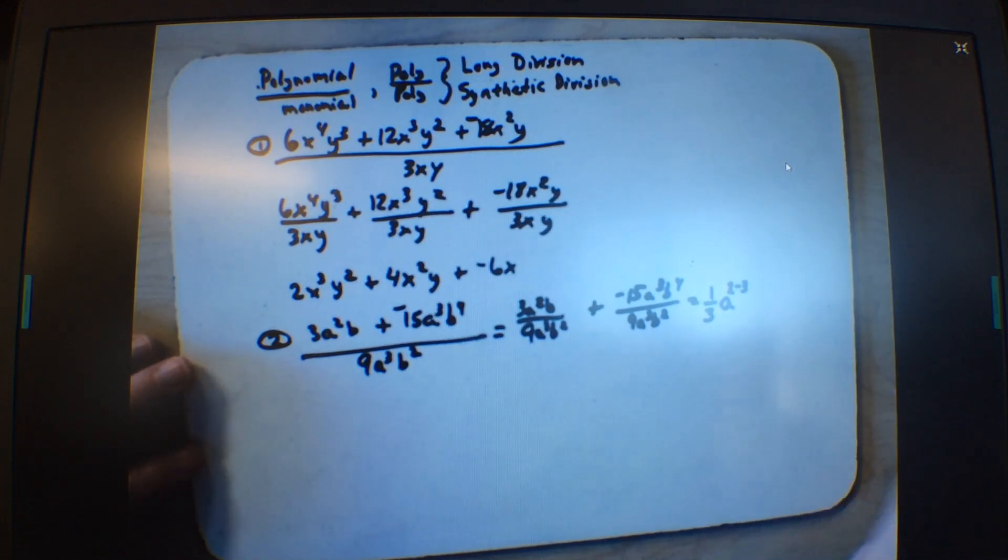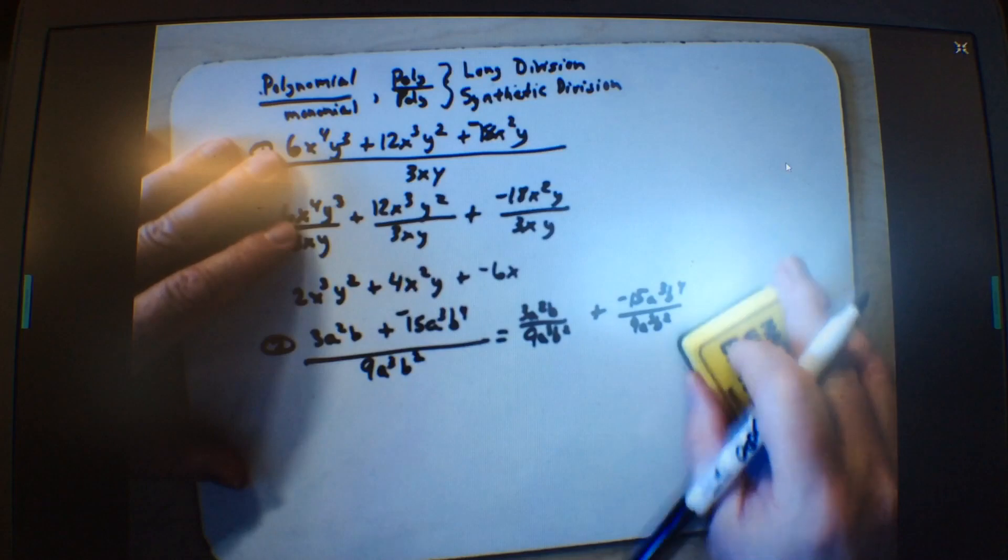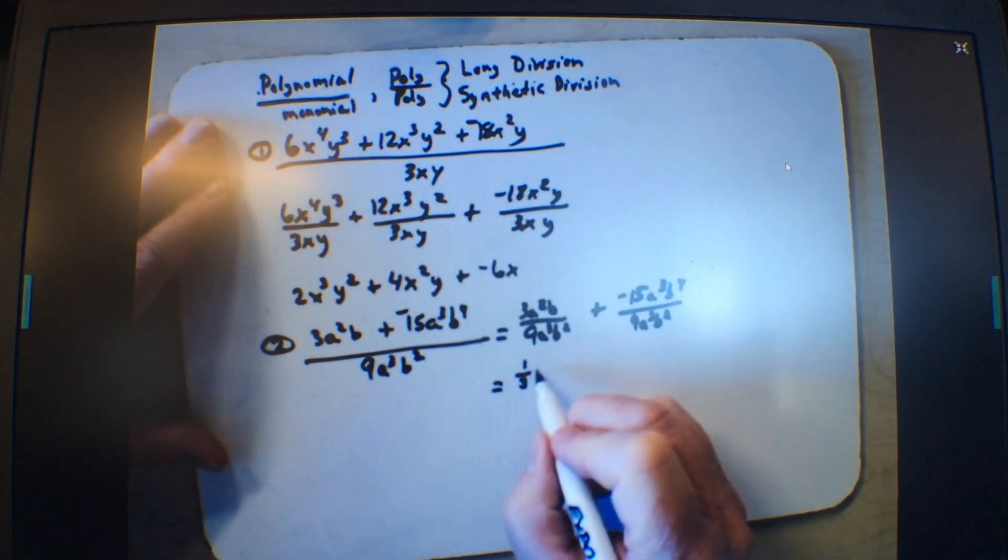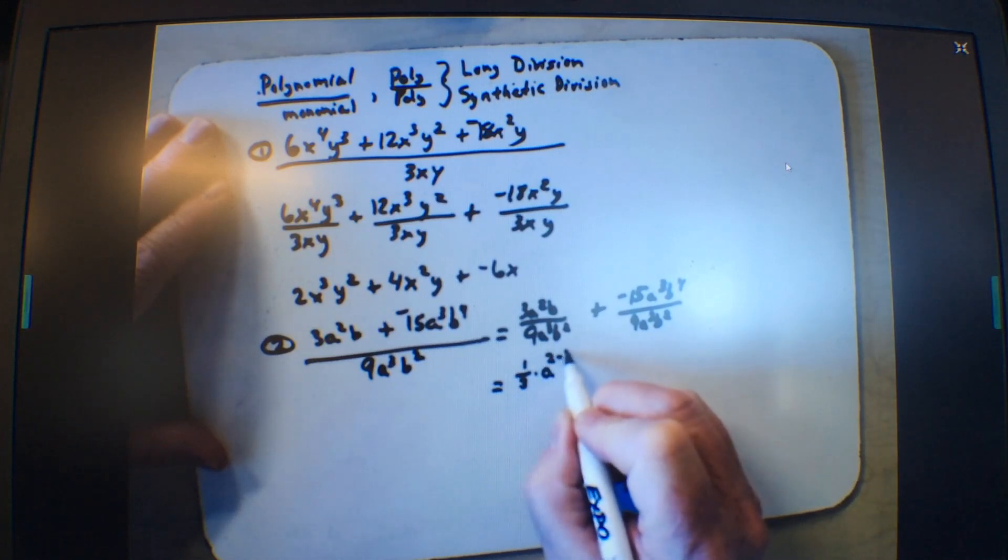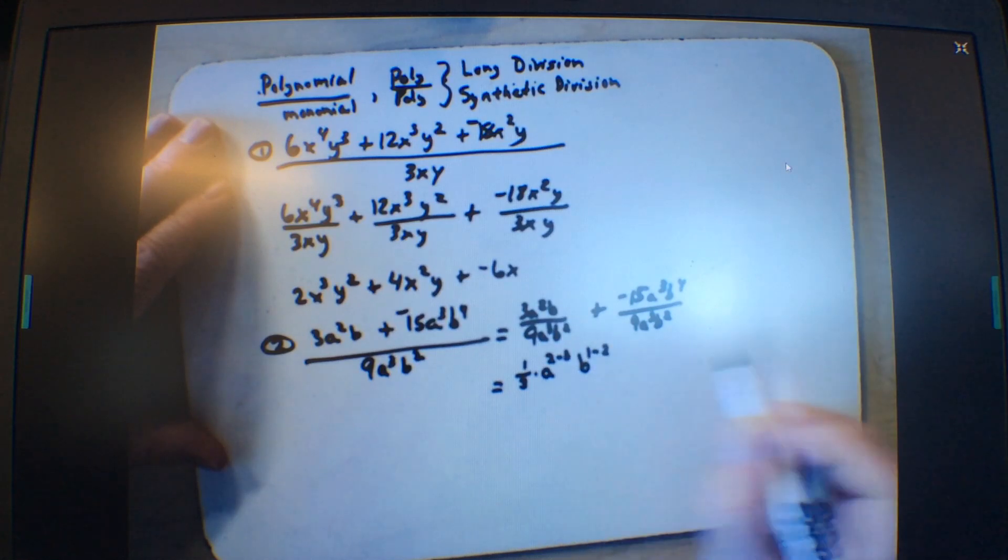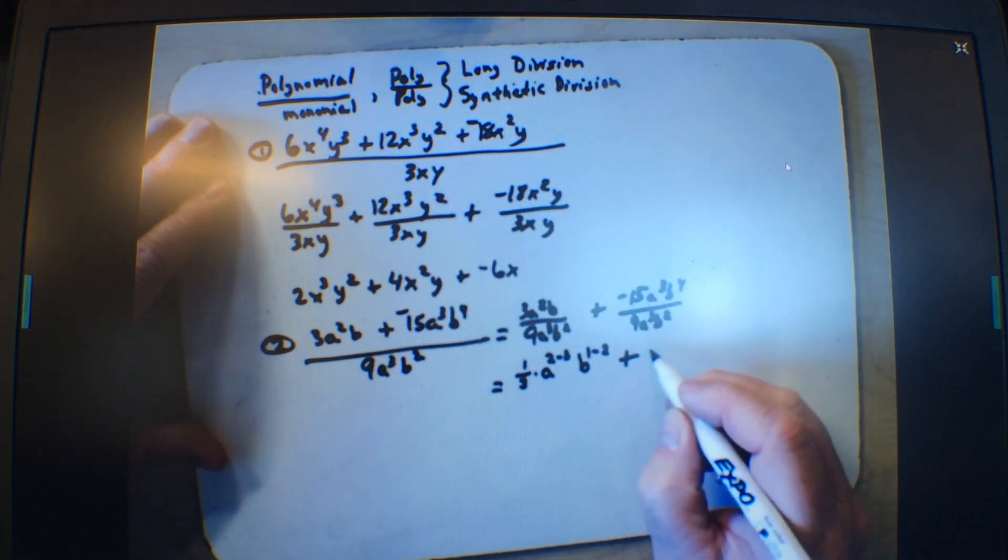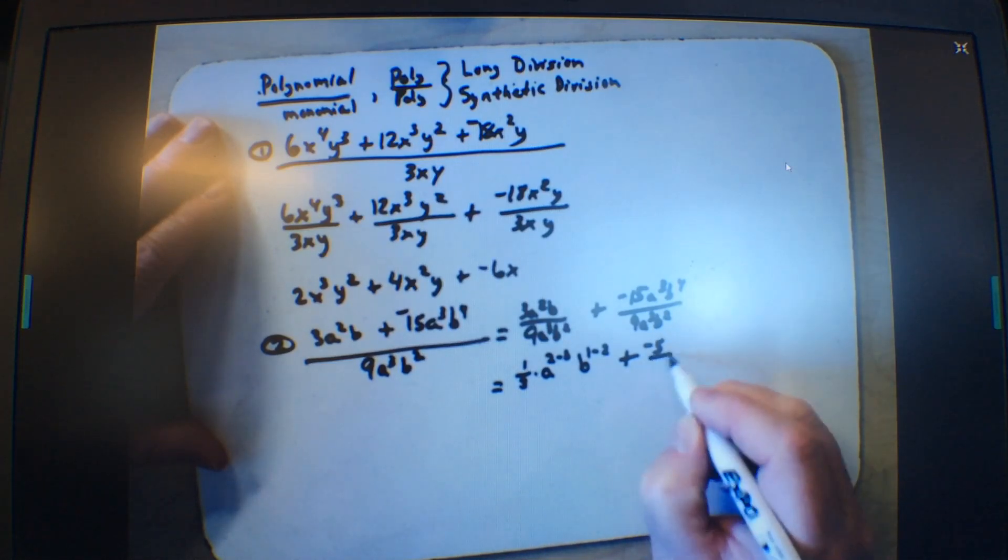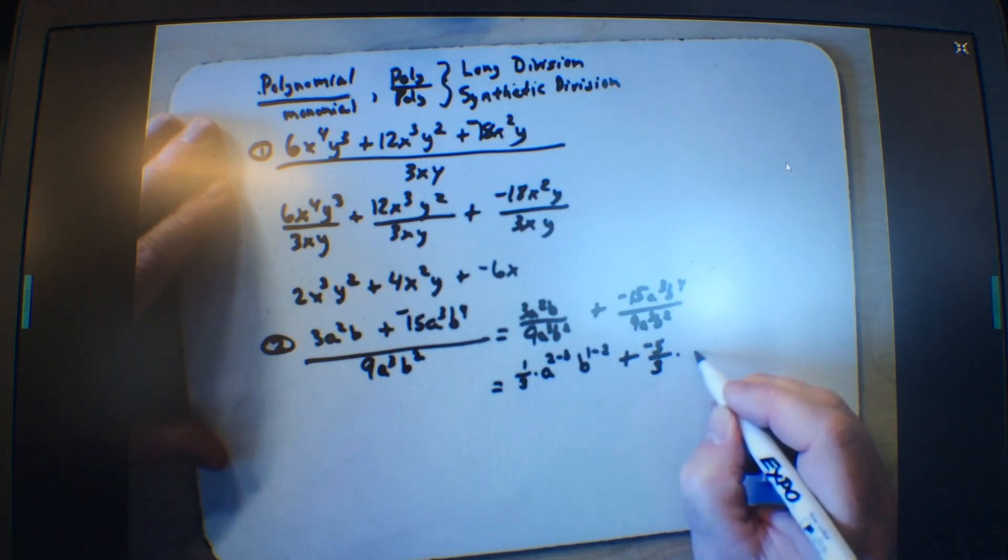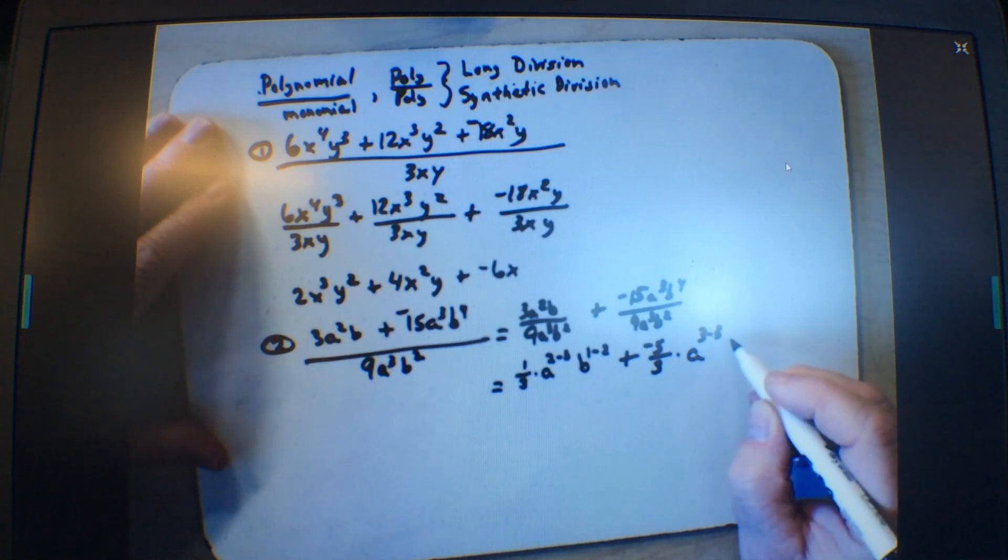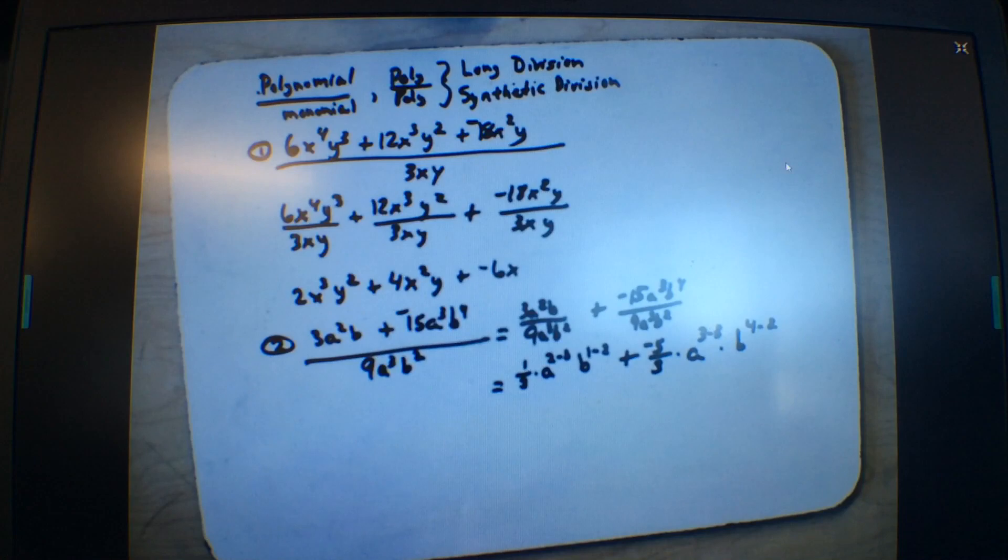And then, I'm going to run out of room, right? Let's move it down below. I'll do it here. 1 3rd times a to the 2 minus 3, b to the 1 minus 2, is that correct? Plus a negative 15 over 9, divide them both by 3, I get a negative 5 over 3 times a to the 3 minus 3, and b to the 4 minus 2. Is everybody in agreement with me?